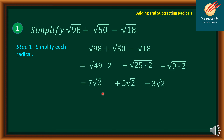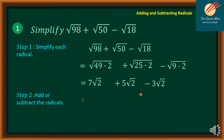We perform the operations, combining like radicals from left to right: 7 plus 5 minus 3. We simply add or subtract the coefficients of the radicals, giving us 9 square root of 2.